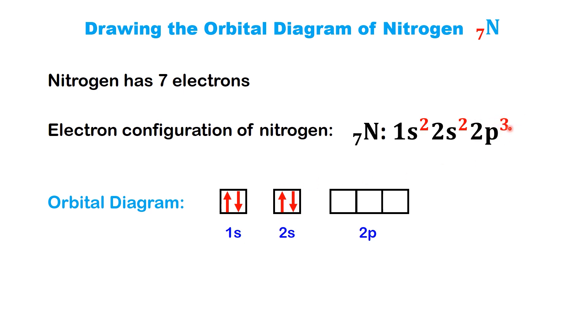Finally, we come to the 2p3 electrons. This means there are three electrons in the 2p orbitals. According to Hund's rule, each of the three 2p orbitals gets one electron first. No pairing yet. This minimizes electron repulsion and makes the atom more stable. So, we'll add one up arrow to each of the three 2p boxes. And that's it. Our final orbital diagram for nitrogen looks like this.